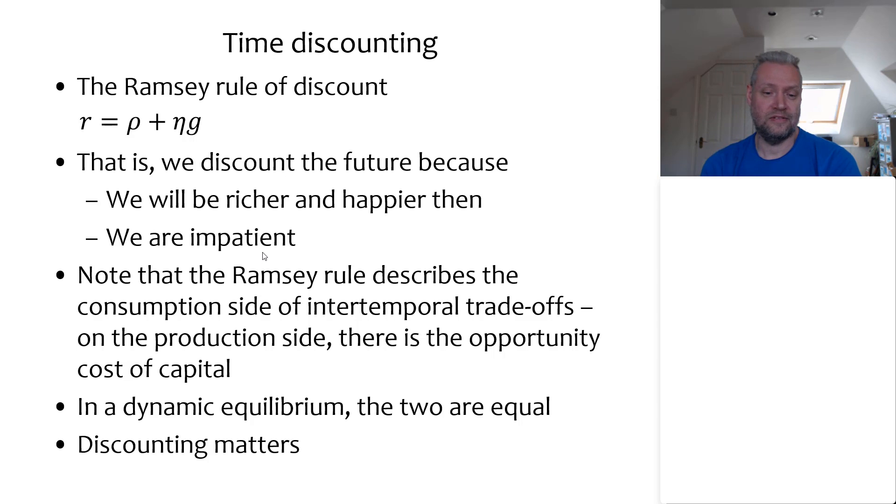Of course, an economy is in some sort of equilibrium. It's not just that the capital market depends on our supply of savings, right? It also depends on what you actually do with the money. If the economy is in a dynamic equilibrium, then this all goes through and the consumption side of discounting equilibrates with the production side of discounting.